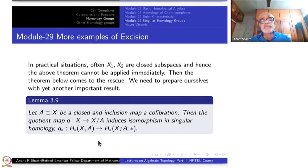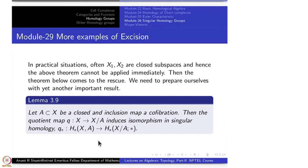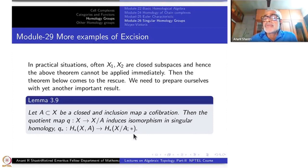We have to do a little bit of work here. There are a few situations which can be taken care of by the following lemma, which is quite important: suppose A is a closed subspace of X, and the inclusion map A to X is a co-fibration. Then the quotient map Q from X to X/A induces an isomorphism in singular homology, H_*(X, A) to H_*(X/A, *).